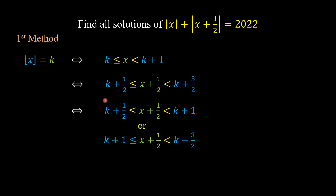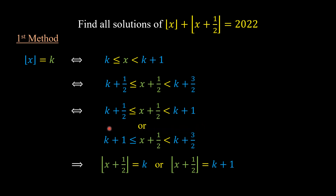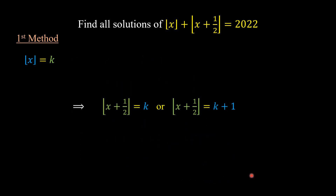For the first interval, we have that the floor value of x plus one-half is equal to k. And for the second interval, we have that the floor value of x plus one-half is equal to k plus one.